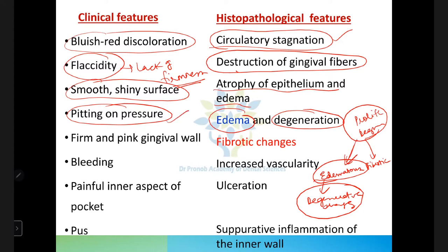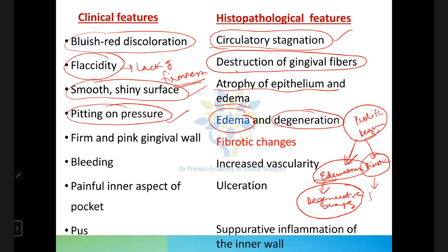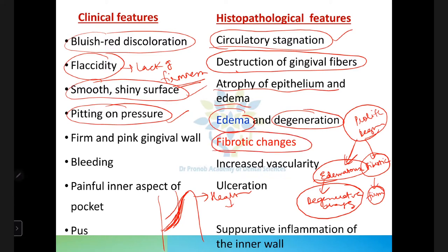In edematous pockets, more edema and inflammatory cells are present — the gingiva is flaccid with spitting on pressure and smooth shiny surface. In fibrotic pockets, proliferation of new capillaries and endothelial cells makes the gingiva firm. Sometimes the outer surface of the gingiva appears healthy — pink and firm — while the inner aspect of the pocket wall shows inflammatory changes going on.